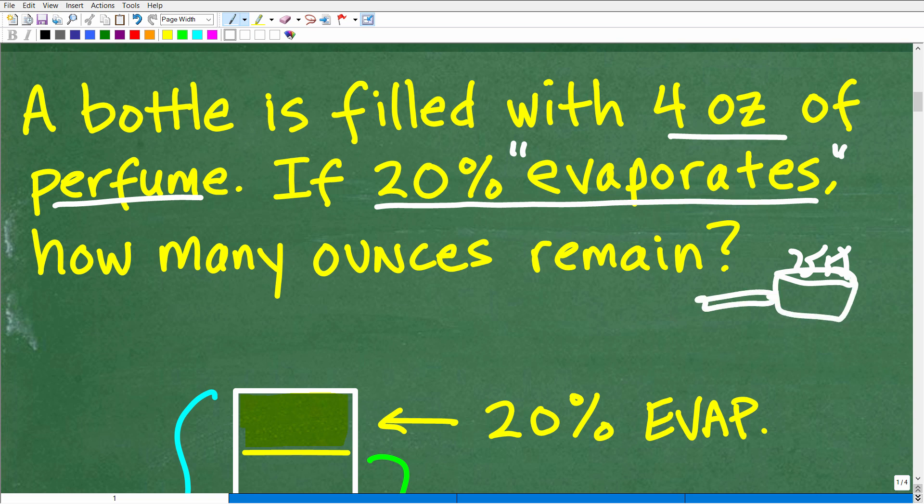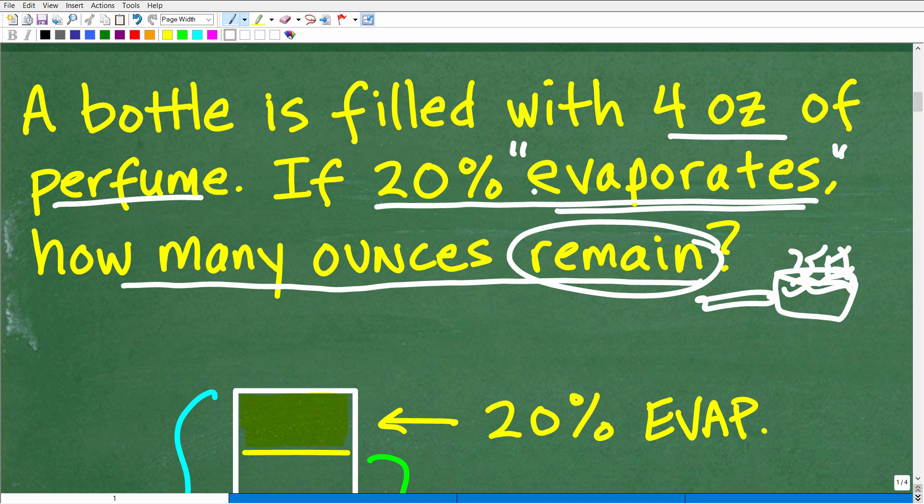Same thing. What happens when you have a little pot on the stove with water? That heat is evaporating away. So that's what evaporation means, just in case you didn't know what that word means. And we're being asked how many ounces remain.